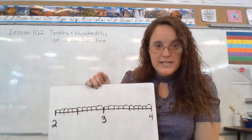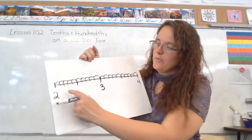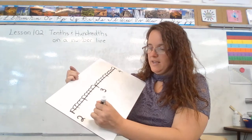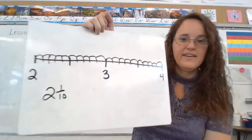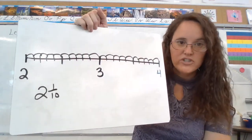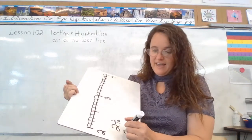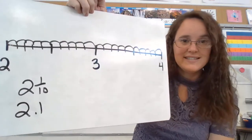So if I've broken them into tenths, right here at the first one, we would say two and one-tenth. Here I've written it as a fraction, but we can also write two and one-tenth as a decimal like this.